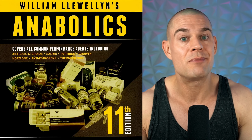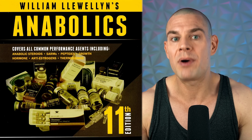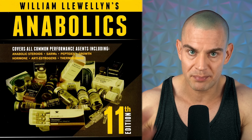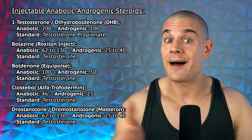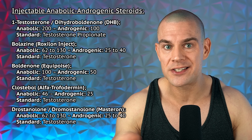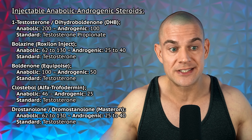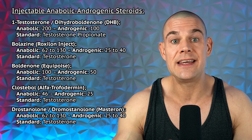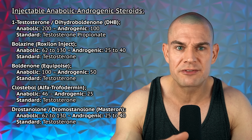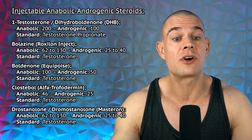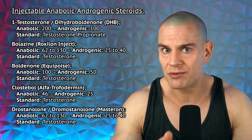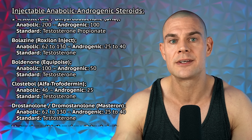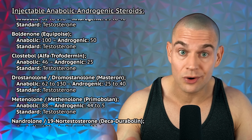So where in the hell do these anabolic to androgenic ratings actually come from? They come from the Anabolics books written by William Llewellyn — the latest release is the 11th edition, published in 2017. I'll link it down below; you'll have to purchase it but it's well worth the read. I collected all of the anabolic to androgenic ratings from Anabolics 11th edition — you can see them on screen now — including the reference standards that each anabolic androgenic steroid was compared to, the alternative chemical names, all commonly used brand names, and the administration route classification.